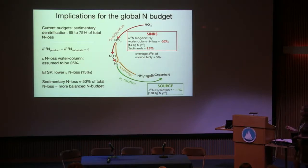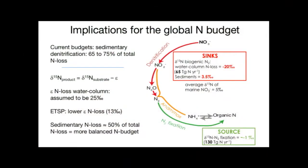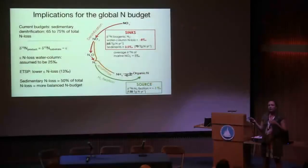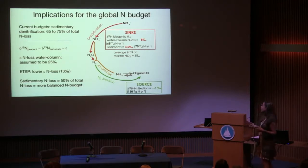Returning to the earlier figure: if we assume an isotope effect for nitrogen loss in the water column of 25 per mil, we calculated we would need a large flux of sedimentary denitrification of more than 200 teragram N per year to isotopically balance the budget. But if we use a lower isotope effect of 13 per mil, we would need only 70 teragram N per year. I'm not claiming there is a low isotope effect everywhere in all ODZs, but the point is that a lower isotope effect in, say, the ETSP means you need less sedimentary denitrification to balance the global marine nitrogen budget.